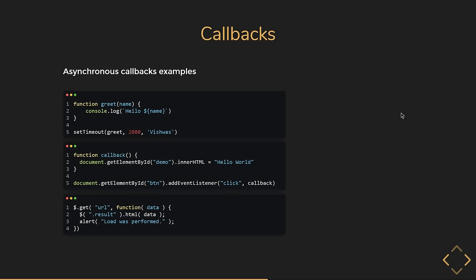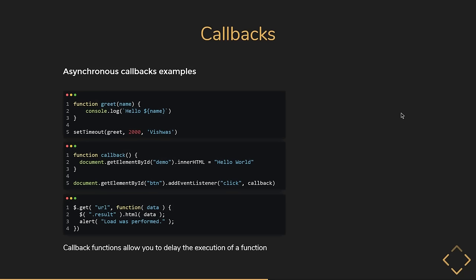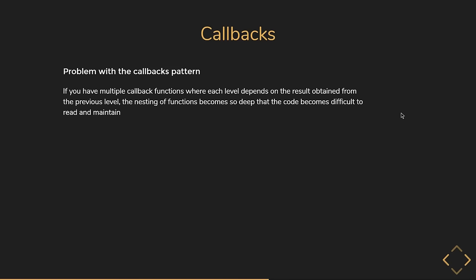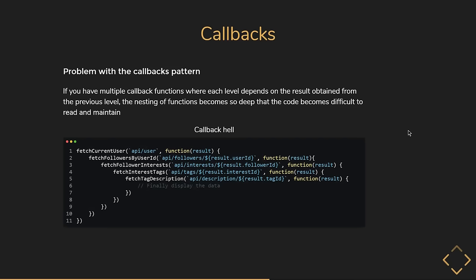Callbacks allow you to delay the execution of a function. Callbacks are heavily used in Node.js. However, there is a problem with the callbacks pattern — if you have multiple callback functions where each level depends on the result from the previous level, the nesting of functions becomes so deep that the code becomes difficult to read and maintain. In the code snippet, each inner function depends on the result from the outer function, and once you go several levels deep, the nesting starts to confuse you.